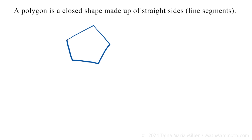It has to be closed. So for example, if I draw a line segment and another one and a third one, but I don't close it — is this a polygon? No, it's not, because it's not a closed shape. But I can make it a polygon if I draw in this side.